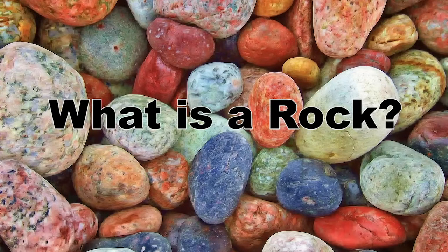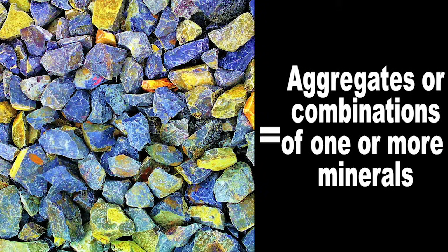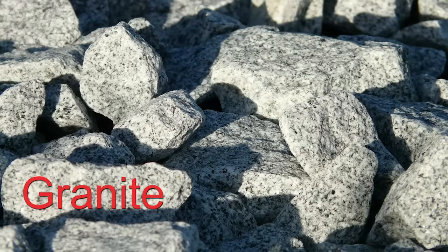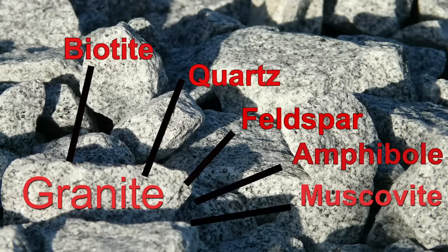So what is a rock? Well, rocks are aggregates or combinations of one or more minerals. For example, the rock granite is composed of biotite, quartz, and many other minerals. Minerals are composed of inorganic compounds or elements arranged in orderly internal structures. To put it even more simply, they're just composed of elements.